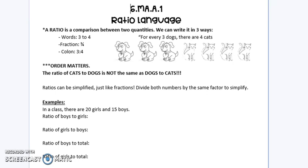A ratio is a comparison between two quantities, and we can write ratios three ways. We can write it in words by saying 3 to 4, with a fraction 3 over 4, or with a colon, and you would still say this as 3 to 4.